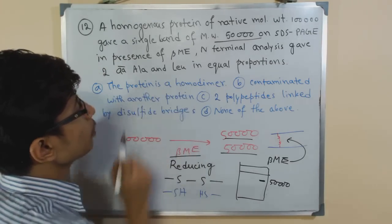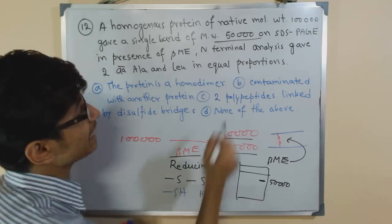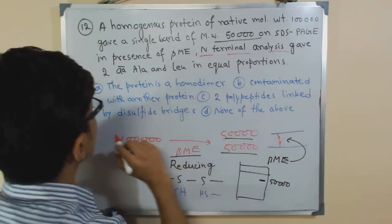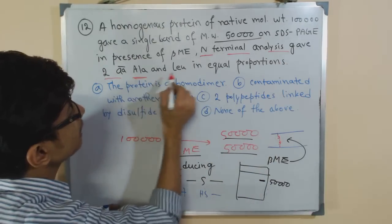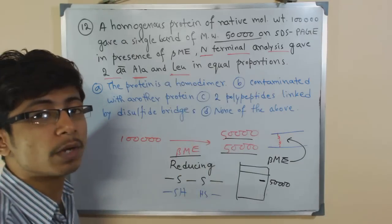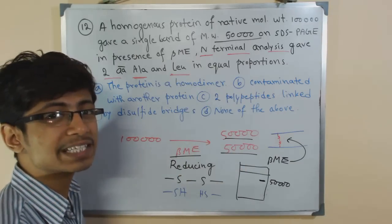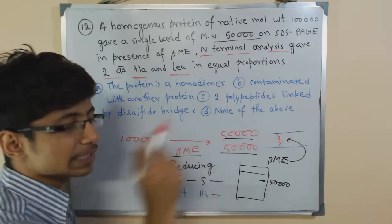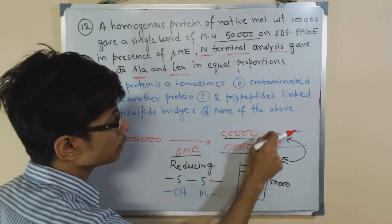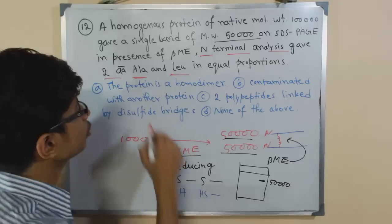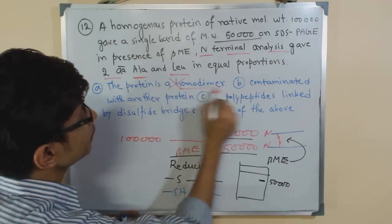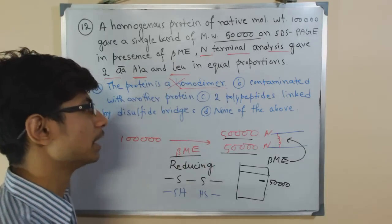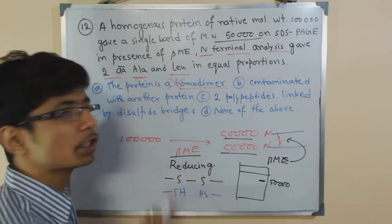So what will be the conclusion? First is the protein is a homodimer. The answer for that is itself provided in the question. The N-terminal analysis gave us the idea of the two amino acids that are present, that is alanine and leucine present in equal proportion on these N-terminals. So that means they are not the same amino acids that are presenting two N-terminal portions of the protein. So definitely they are not a homodimer. If it is going to be a homodimer, they should be containing same amino acids repeating in the N-terminal. But that's not the case. So they are definitely not homodimers.